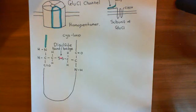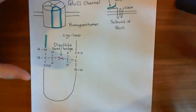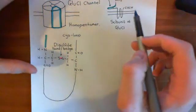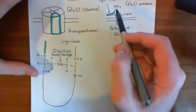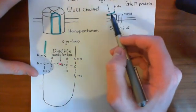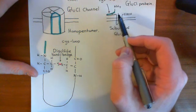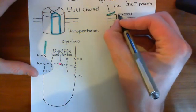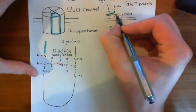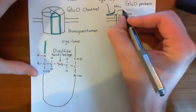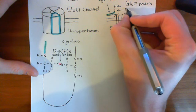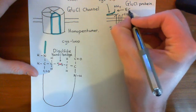Welcome to this next video in which we are discussing the GluCl channel and the mechanism of action of ivermectin. We've seen that the GluCl channel has this subunit structure, where you have this extracellular portion. All of this portion with the cis-loop that is prior to this first membrane-spanning alpha helix is known as the extracellular portion, or the EC portion.